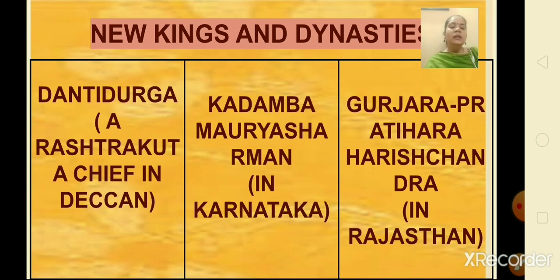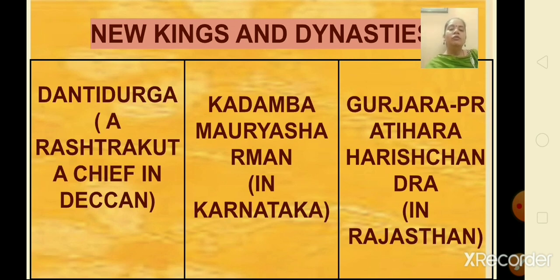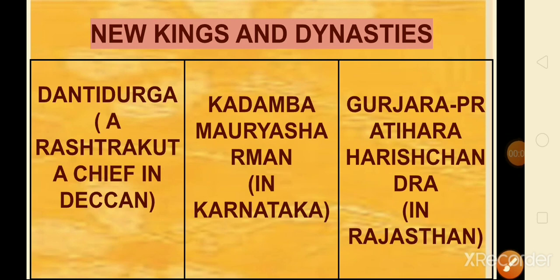The new kings and dynasties that came up during that period include: Dantidurga, who was a Rastrakutta chief in the Deccan; Mayura Sharman in Karnataka; and Gurjara Pratihara Harishchandra in Rajasthan.